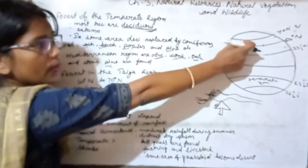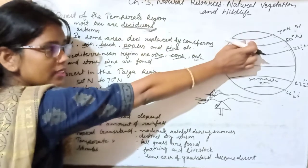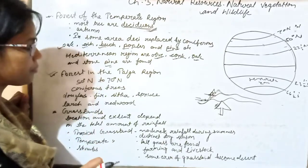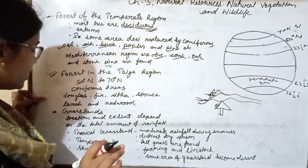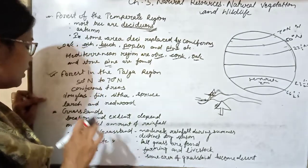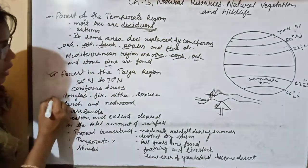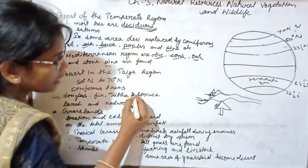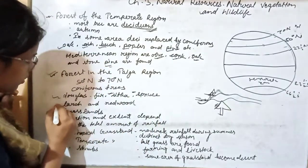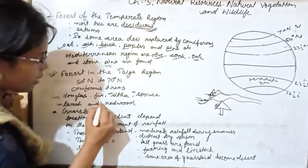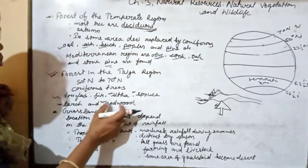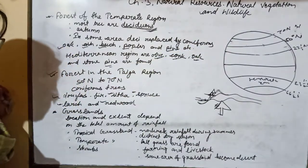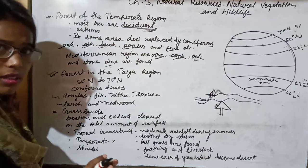Coniferous forests are found in the Taiga region. The important trees found here are Douglas fir, Sitka, cypress, larch, and redwood. These are the important trees found in the Taiga region. That is about the forests.